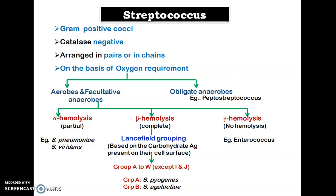Examples of alpha hemolysis are Streptococcus pneumoniae and Streptococcus viridans. The beta hemolytic group contains many Streptococcus species, and these are grouped into different groups from group A to group W, excluding I and J. This grouping is known as Lancefield grouping, and it is based on the carbohydrate antigen present on the cell surface of Streptococcus.